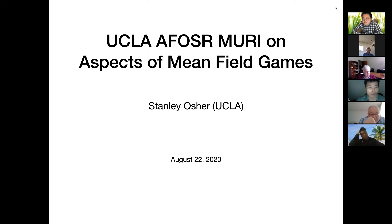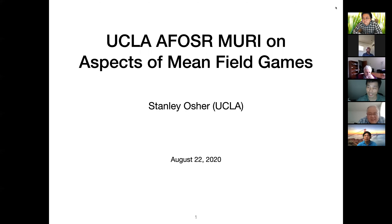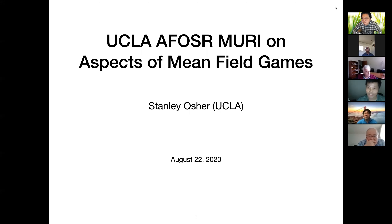He received the Gauss Prize at the 2014 ICM meeting, which is the highest award for applied mathematicians. He also received other prizes and has many awards for his contributions to engineering and high-level mathematics. He was elected to the National Academy of Sciences, National Academy of Engineering, and the American Academy of Arts and Sciences. He has over 140,000 citations according to Google Scholar. Let's welcome Professor Stanley Osher.